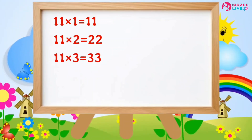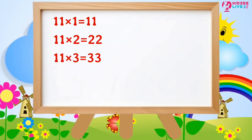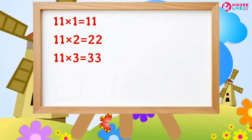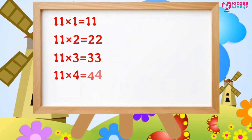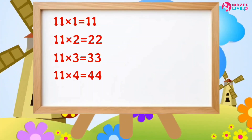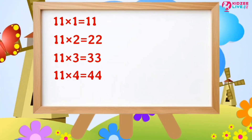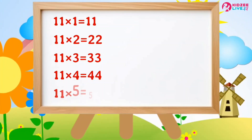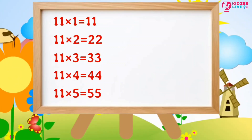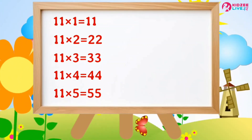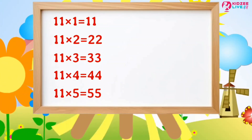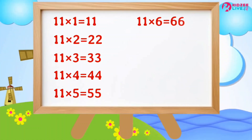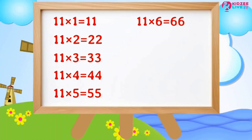Eleven threes are thirty-three. Eleven fours are forty-four. Eleven fives are fifty-five. Eleven sixes are sixty-six.